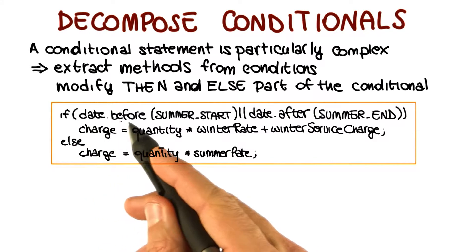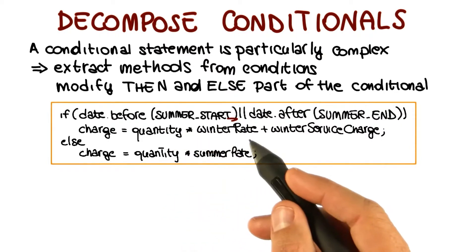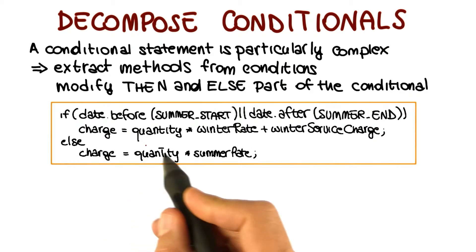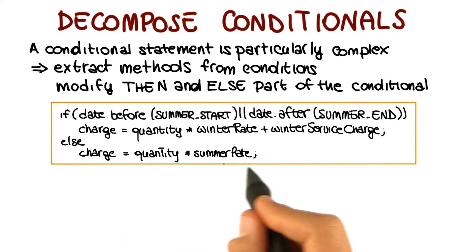So as you can see, there is a conditional here that checks if the date is before the beginning of the summer, so before summer start, or it's after the summer end, then it computes the charge using some winter rate. Otherwise, if we are in the summer, it will compute the charge using a summer rate.